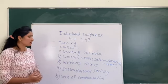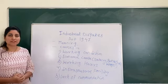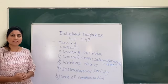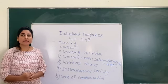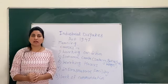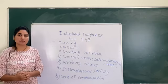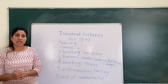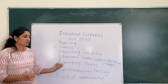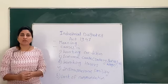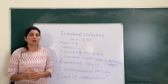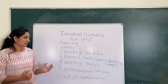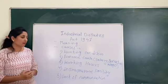The third cause of industrial dispute is working hours. Normally, industries operate day to night, like 24 hours. Employees are not satisfied with these 24-hour working hours, and that is why disputes occur.